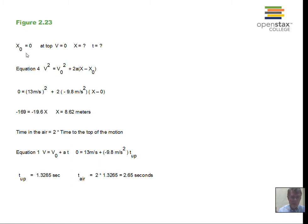We can assume, starting at ground level, X₀ is zero. At the top of the motion, when the object doesn't go any higher, the velocity at that instant is zero. We're looking for the final X position. We were given A of minus 9.8. Using equation 4, which does not have the time variable, with V₀ of 13 and A of minus 9.8, we can calculate the maximum height. The result is 8.62 meters — you should verify that.